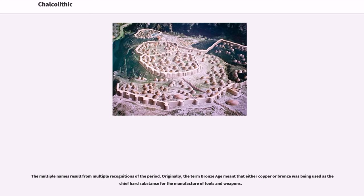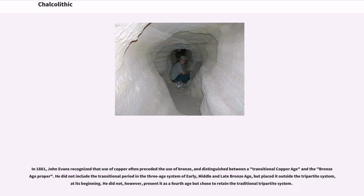The multiple names for this period result from multiple recognitions of it. Originally, the term Bronze Age meant that either copper or bronze was being used for the manufacture of tools and weapons. In 1881, John Evans recognized that the use of copper often preceded the use of bronze, and distinguished between a transitional Copper Age and the Bronze Age proper.